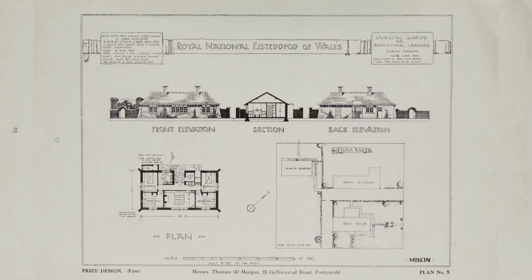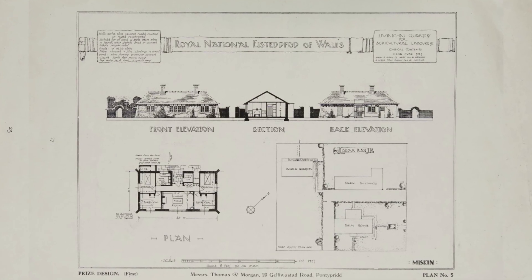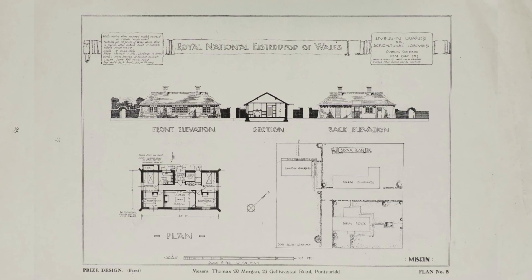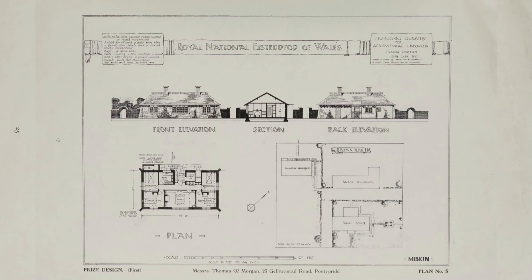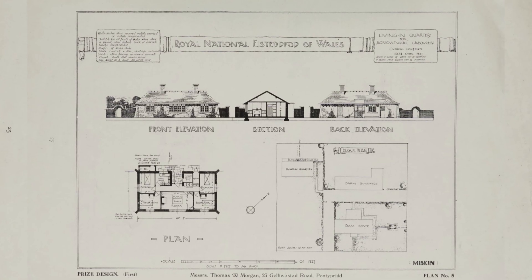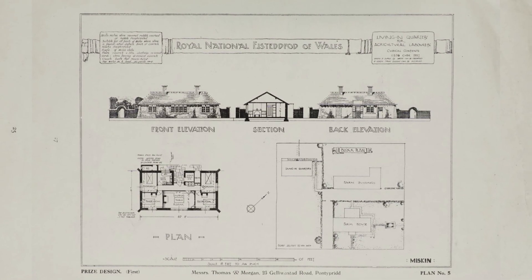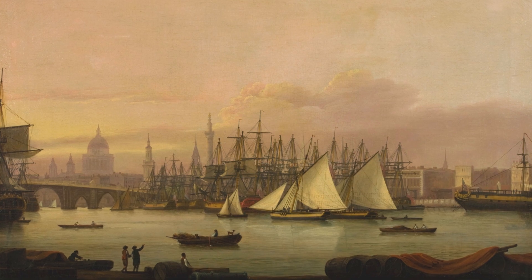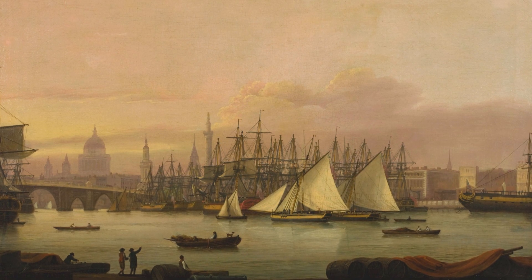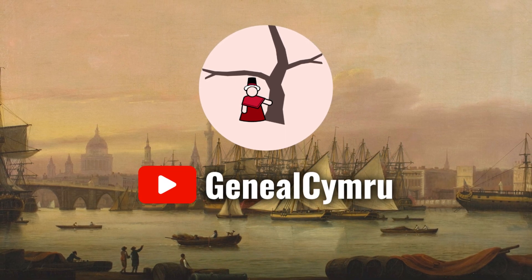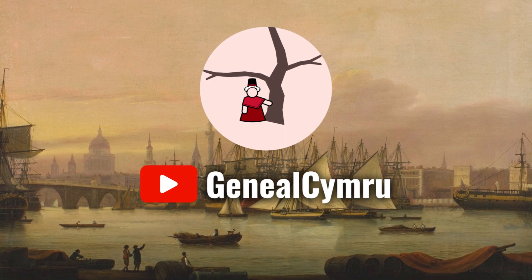It can be frustrating, but there really is so much out there that you can use. The cottage plans that you're looking at now are from the Internet Archive, digitized by the University of Illinois Urbana-Champaign and American Libraries. The Internet Archive is one of those places that has a lot of historical books and images which are in the public domain. So go out, do your research, and bring it to life with historical photographs and paintings. Check out Geneal Cymri on YouTube, and enjoy the rest of the event.